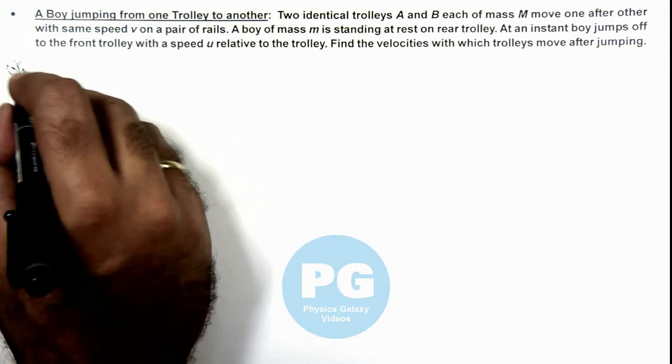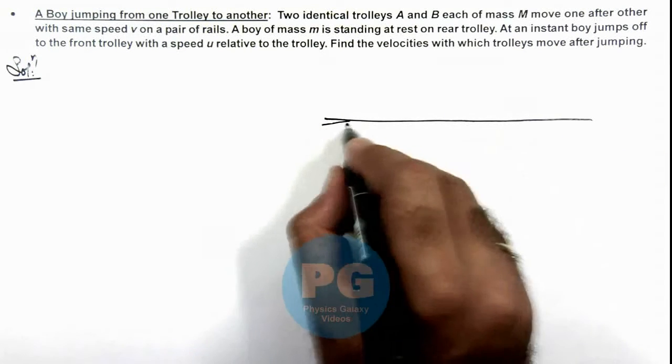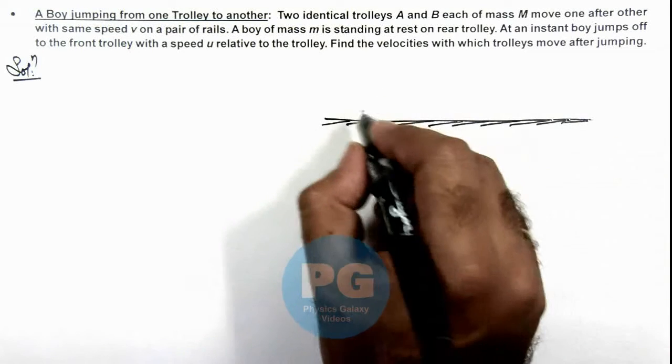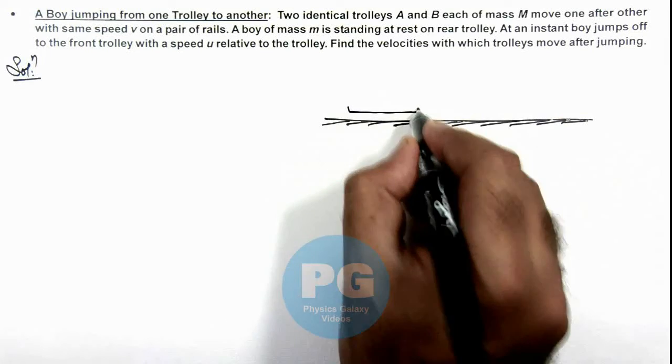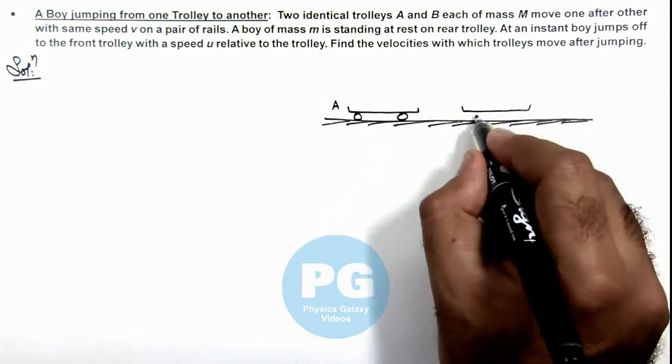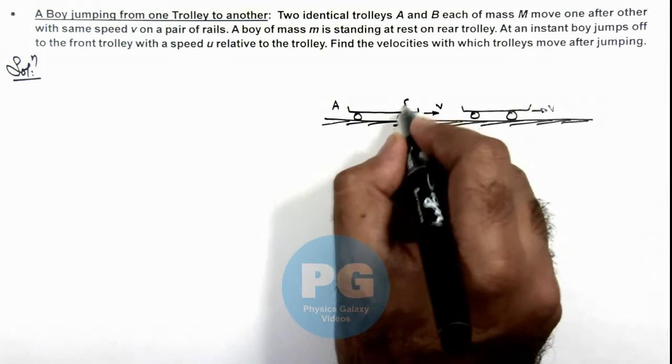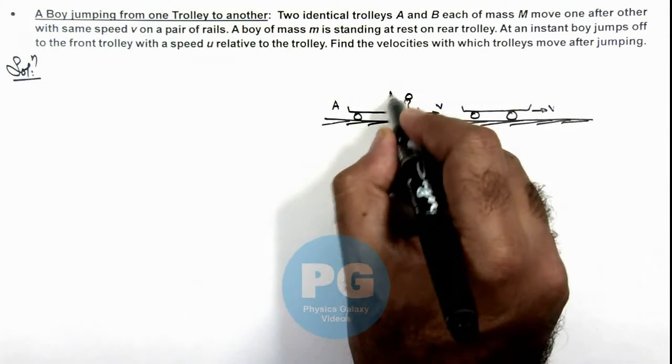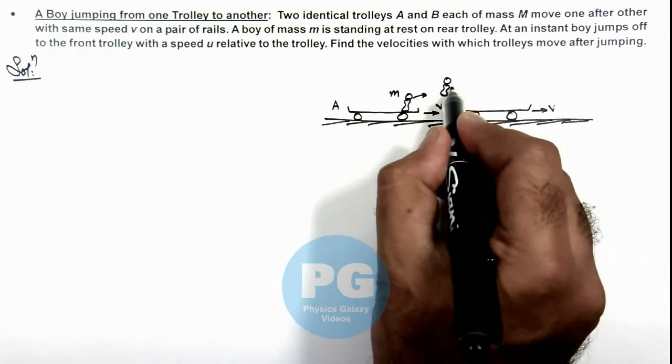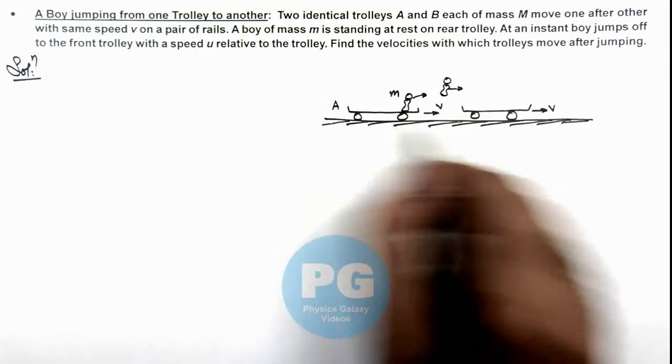We can analyze the situation by drawing it first on the ground. This is a system of parallel rails. Here there is one trolley A and another trolley B, which are both moving at speed v. A boy of mass m is standing on the rear trolley. He jumps off the trolley, comes in air, and finally lands on the second trolley. We are required to find the final velocities of these trolleys.